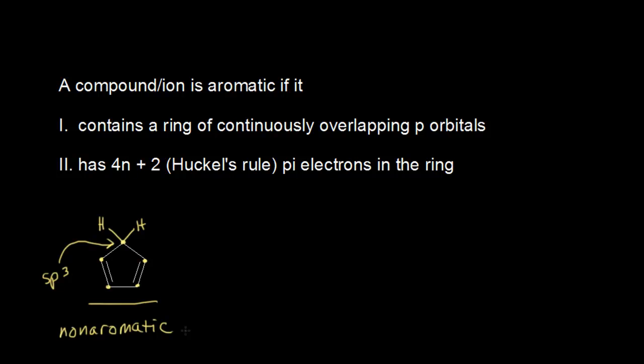However, cyclopentadiene has an interesting property — it's extremely acidic for a hydrocarbon. It actually has a pKa of approximately 16 for one of these two protons drawn in yellow. There must be some sort of stability associated with the conjugate base in order for cyclopentadiene to be so acidic.